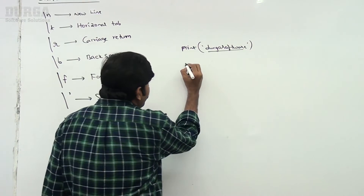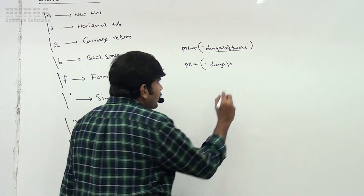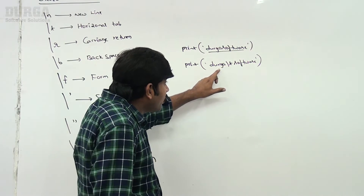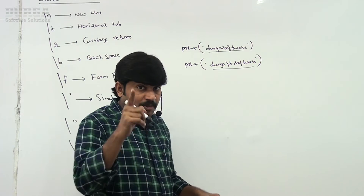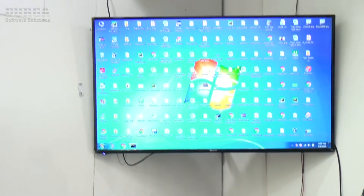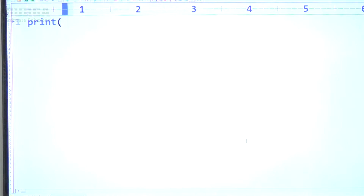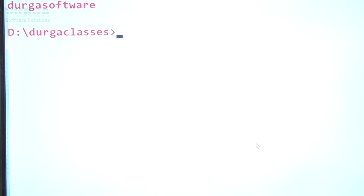If I print 'Durga\t software', backslash t is a tab character — tab means spaces. Between Durga and software you can see a tab space in the output. Now if I use backslash n instead, 'Durga\n software', the output will have Durga on the first line and software on the next line.